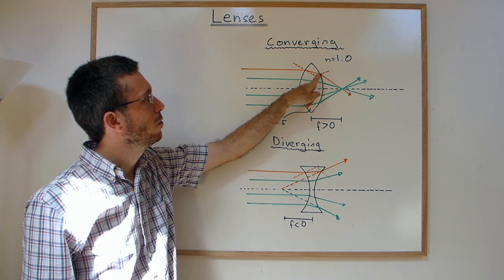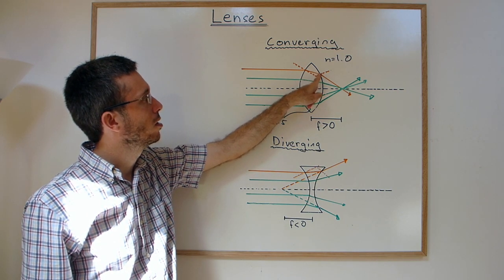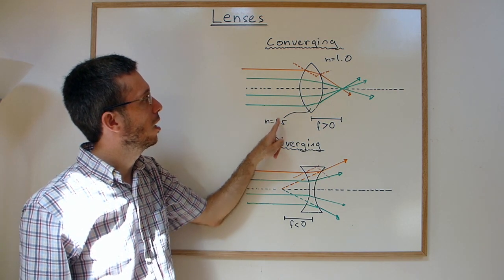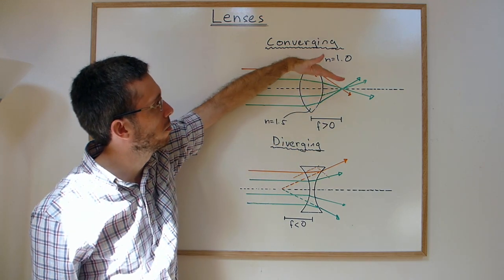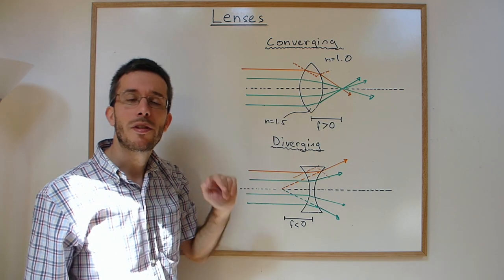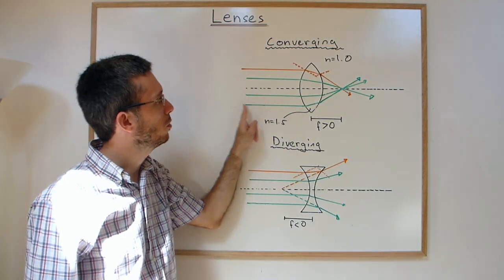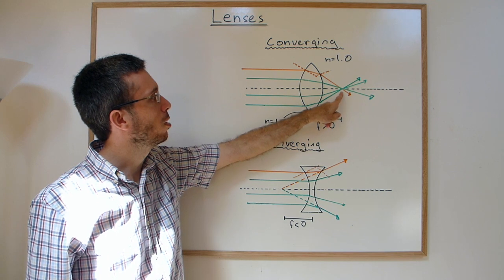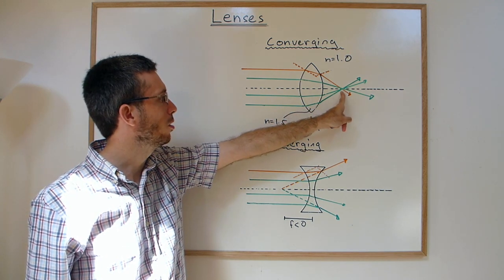When hitting the second surface, you're going from the higher to the lower index, so you're bending away from the normal. All the parallel rays converge at one point, called the focal point.